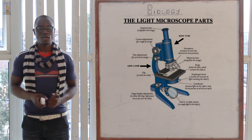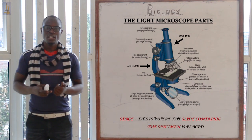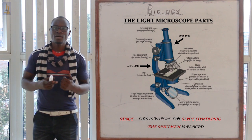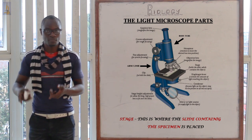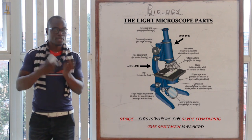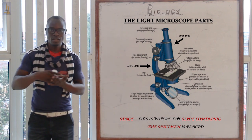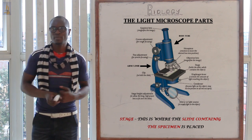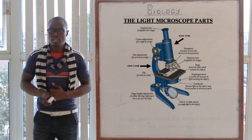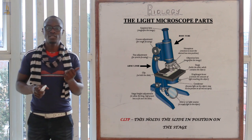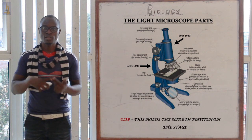The stage is where the slide containing the specimen is placed on the microscope. The clip holds the slide in position on the stage.